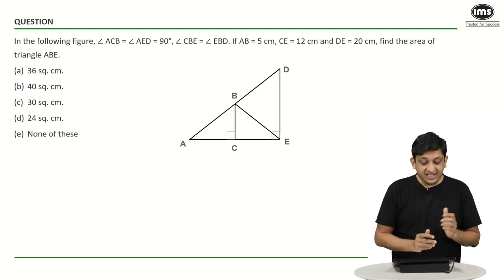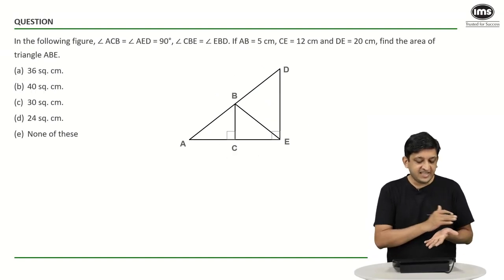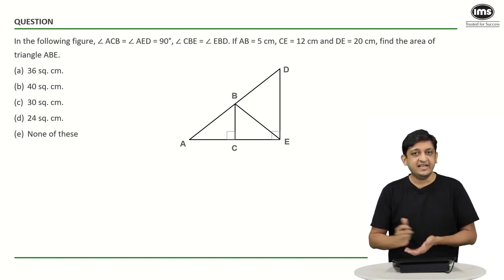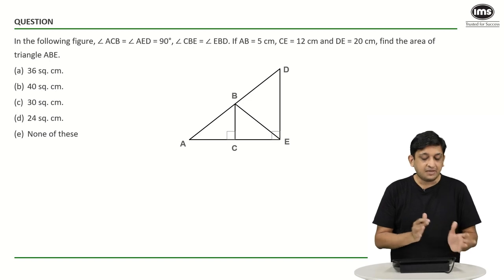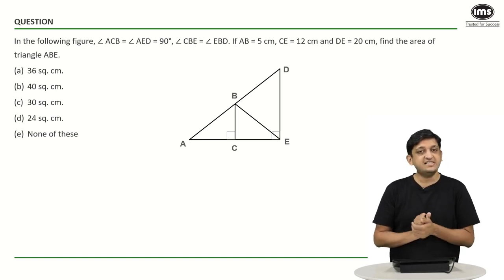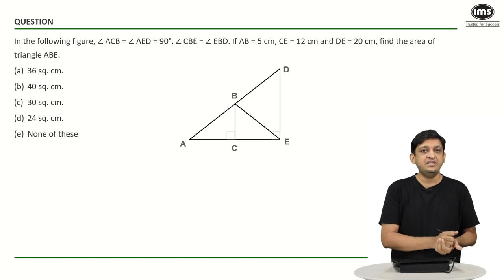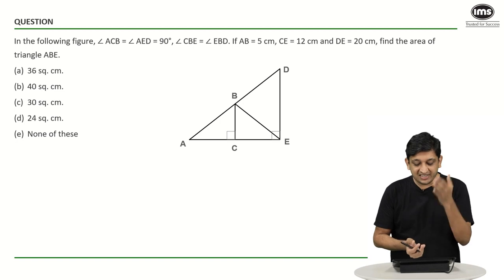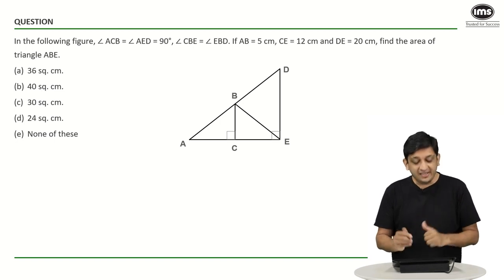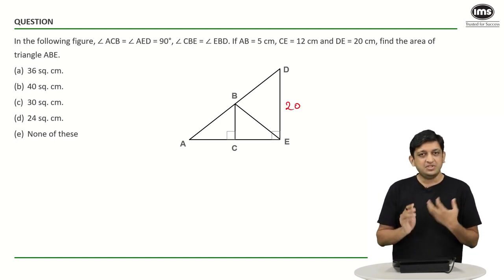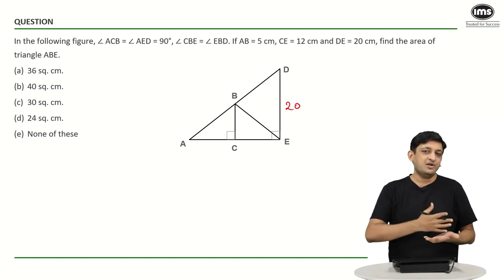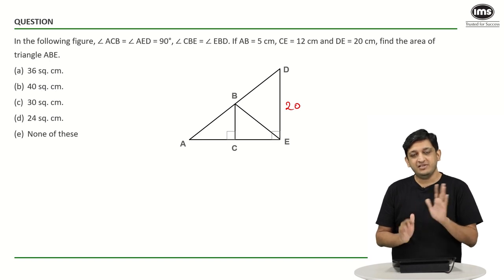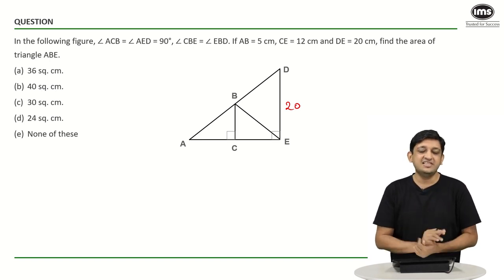In the third question, angle ACB is 90 degrees and angle AED is also 90 degrees. We are given some side lengths and need to find the area of the smaller triangle ABE. One approach is to notice that DE equals 20 and think about 3-4-5 right triangles. As soon as you see 20 as a perpendicular side in a right triangle, you should consider multiples of 3-4-5.